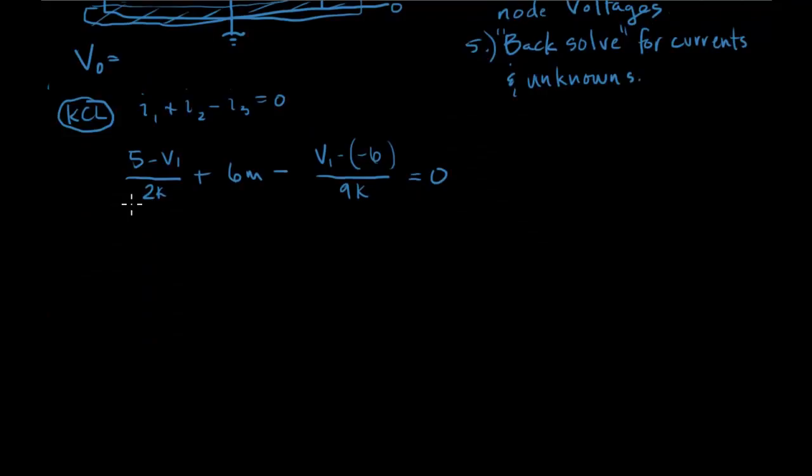Now let's just solve for V. So I'm going to get a common denominator by multiplying both of these by a good one like 9 over 9 here and 2 over 2 here. So I'll get 45 minus 9V1 over 18 plus 6M minus 2V1 and the minus and the minus make a plus. So that will be 12 over 18K equals zero.